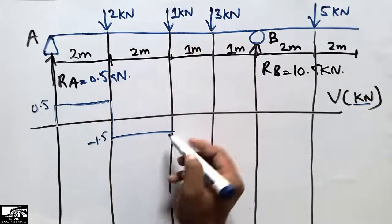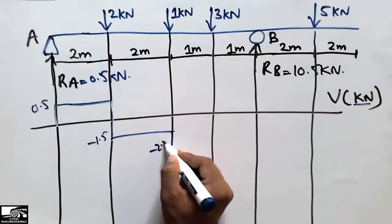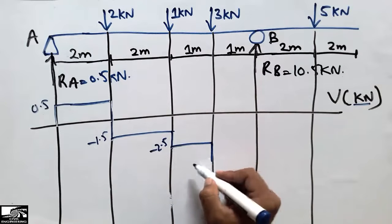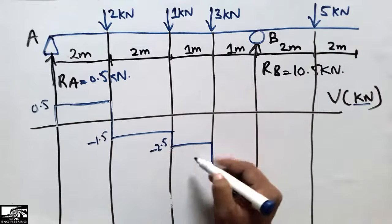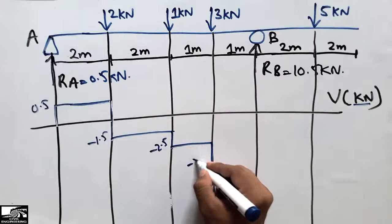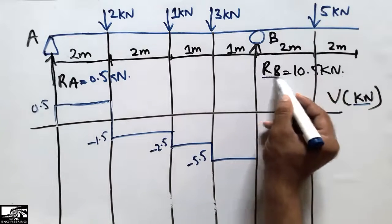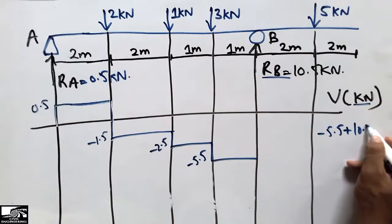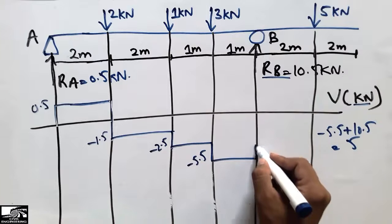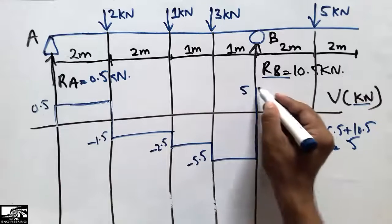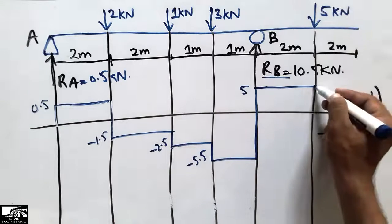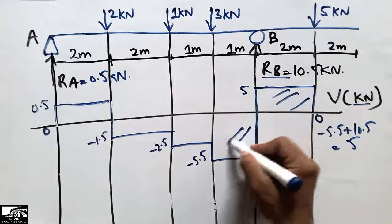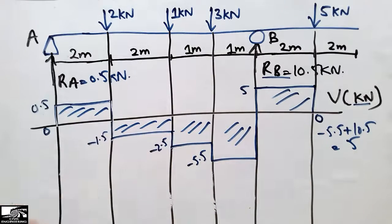Next, 1 kN acts downward: −1.5 − 1 = −2.5 kN. Then 3 kN acts downward: −2.5 − 3 = −5.5 kN. RB = +10.5 kN acts upward: −5.5 + 10.5 = 5 kN. Then 5 kN acts downward: 5 − 5 = 0. The shear force diagram returns to zero at the right support.